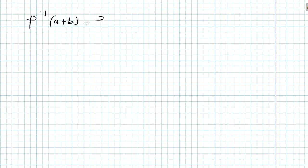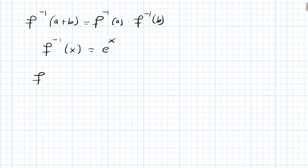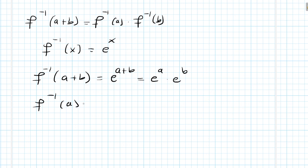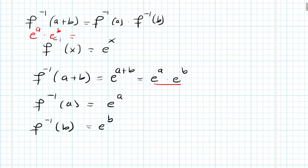Finally, we want to prove that f inverse of a plus b equals f inverse of a times f inverse of b. We showed previously that f inverse of x equals e to the x. So f inverse of a plus b is e to the a plus b, which equals e to the a times e to the b. Since f inverse of a equals e to the a and f inverse of b equals e to the b, we have f inverse of a plus b equals f inverse of a times f inverse of b. That completes the proof.